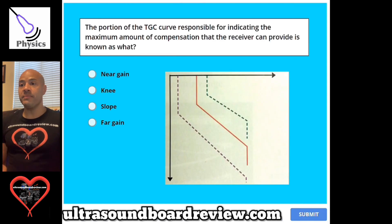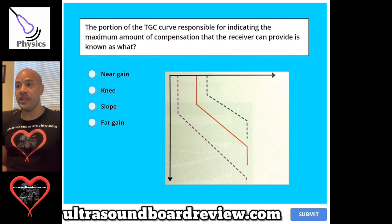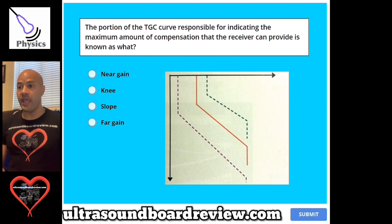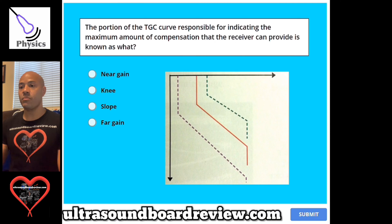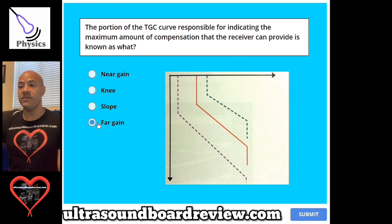Question 93. The portion of the TGC curve responsible for indicating the maximum amount of compensation that the receiver can provide is known as what? A, near gain. B, knee. C, slope. Or D, far gain. The answer is D, far gain.